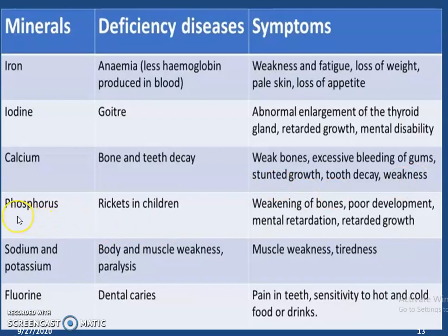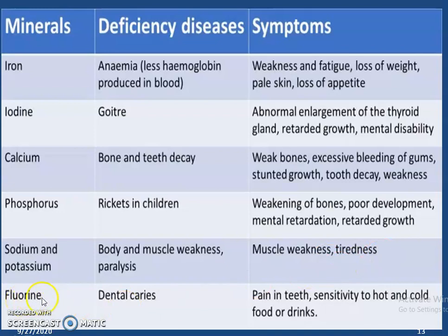If we have deficiency of phosphorus in our diet, children suffer from rickets. The symptoms are weakening of bones, poor development, mental retardation, and retarded growth. If we have deficiency of sodium and potassium, then we suffer from body and muscle weakness, and sometimes paralysis. Symptoms are weak muscles and tiredness. If we have less fluorine in our diet, then we suffer from dental caries. Symptoms include pain in teeth and sensitivity to hot and cold food or drinks.